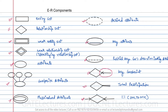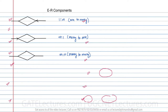Here it is representing total participation, and this is representing a one-to-one relationship, because on both sides we have this sign, which means the relation is one to one.